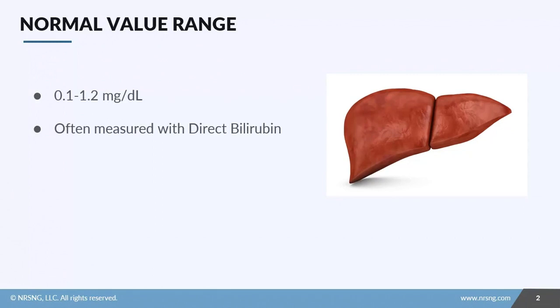In this lesson we're going to take a look at total bilirubin. Bilirubin is a marker that we use to look at liver dysfunction or liver function, and the normal value for total bilirubin is going to be 0.1 to 1.2 milligrams per deciliter. It's often measured with direct bilirubin.